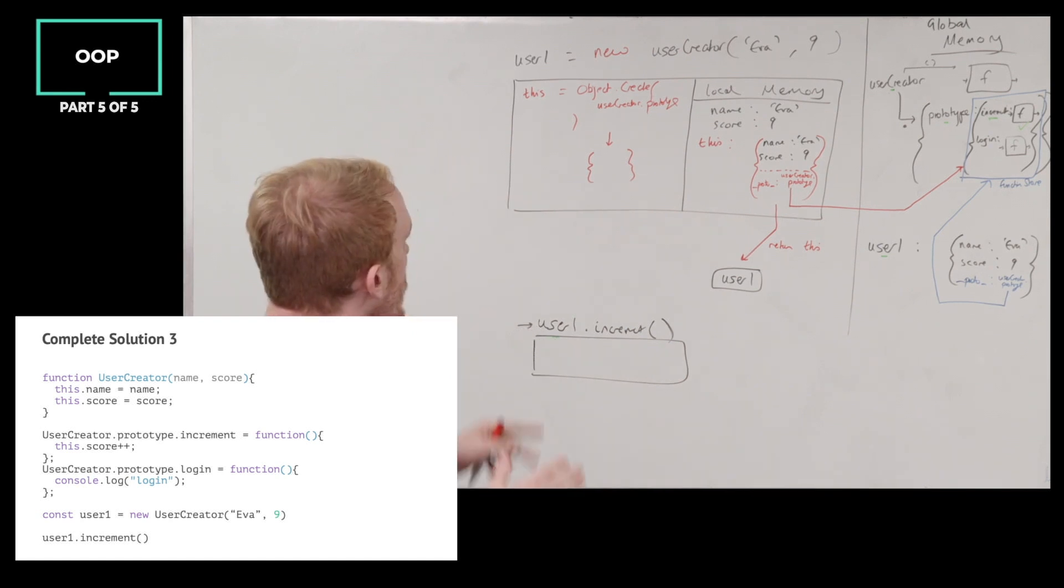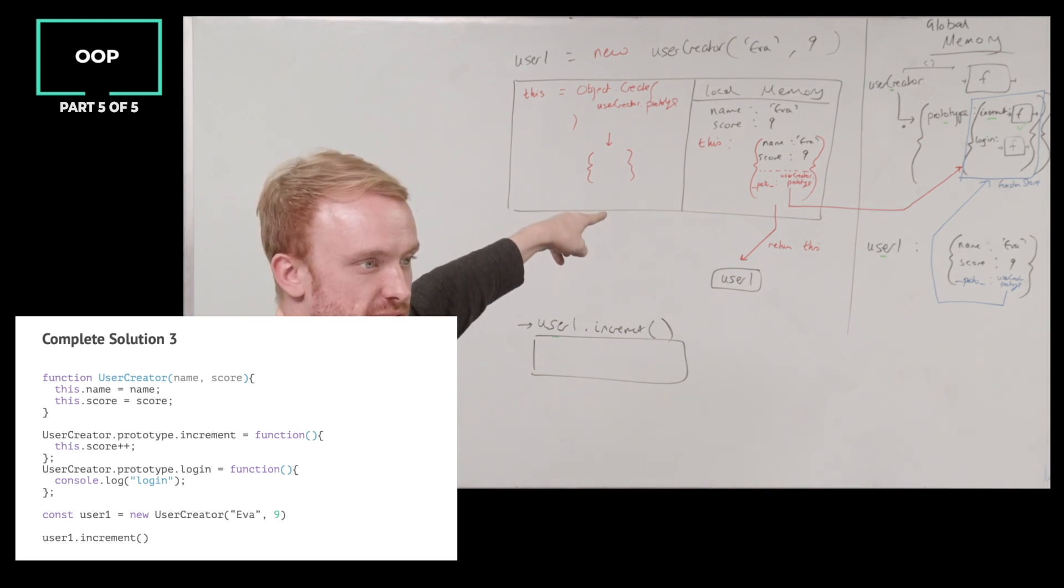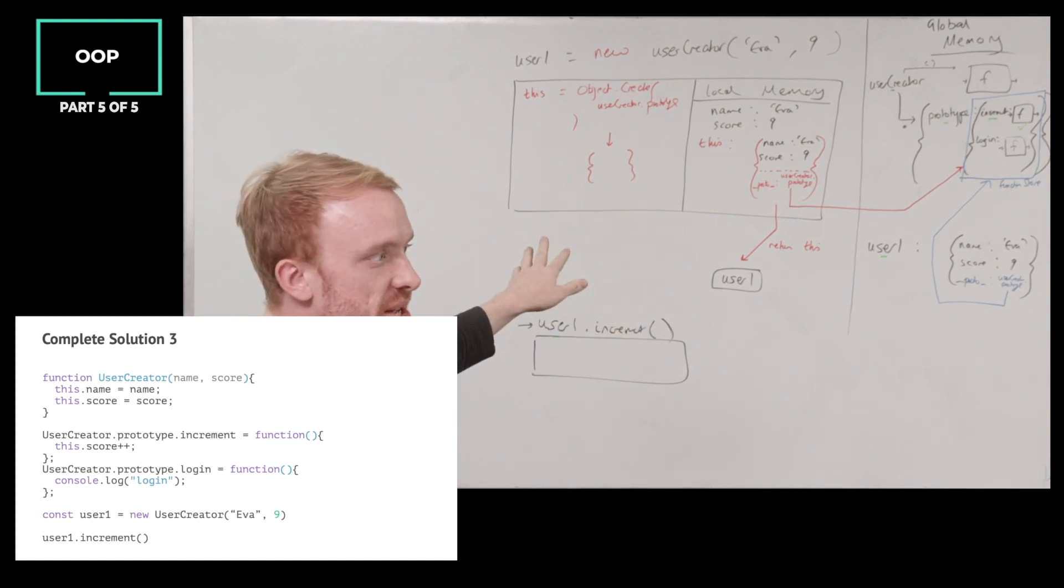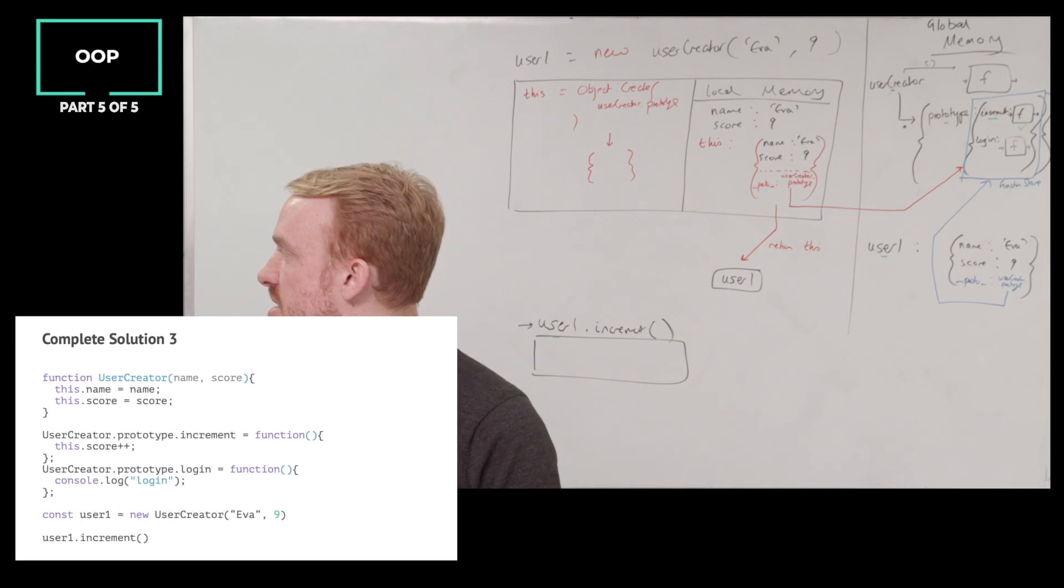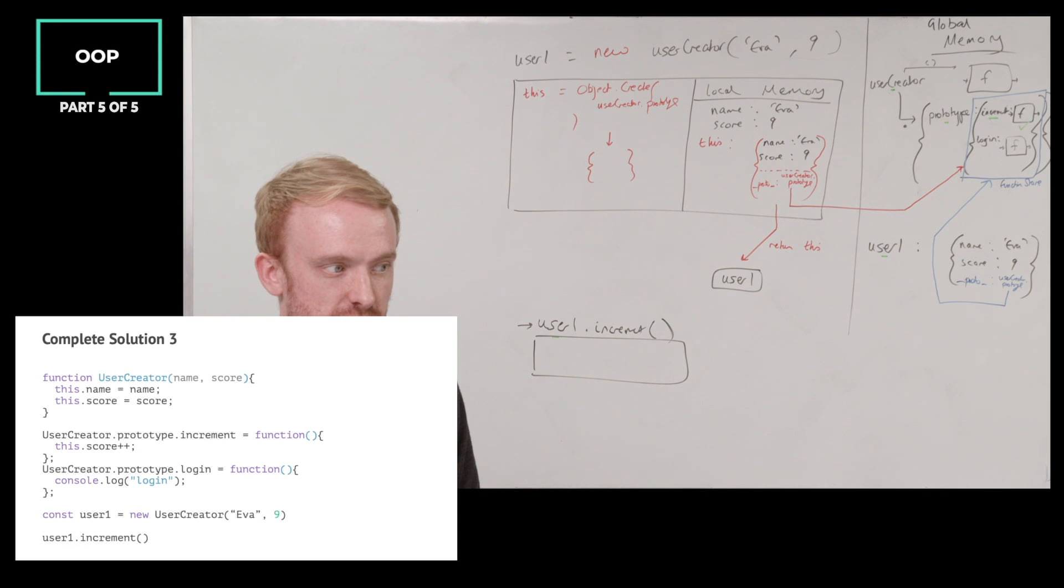Now, know one thing. If I ran user creator without the new keyword, do I automatically create this empty object? No, right? Without the new keyword, there's the this dot name and this dot score. What's the this going to refer to? JavaScript never needs anything unevaluated. It's going to point somewhere.